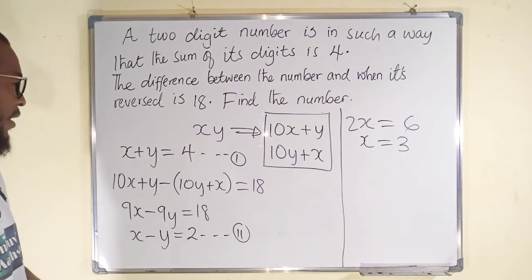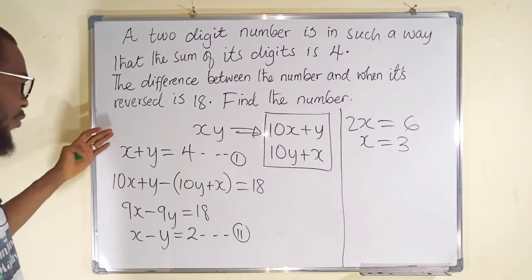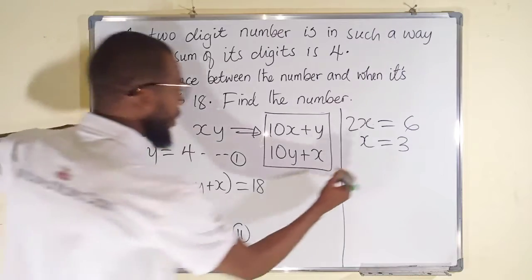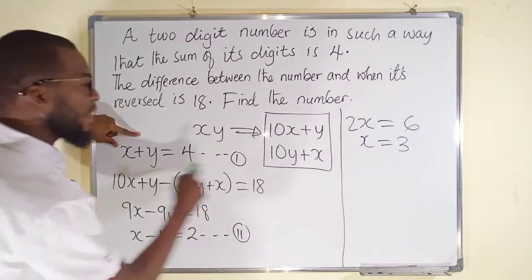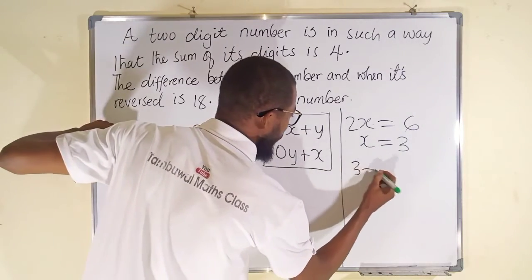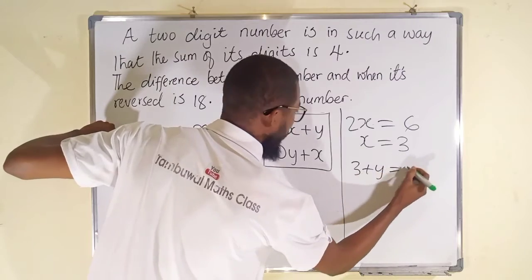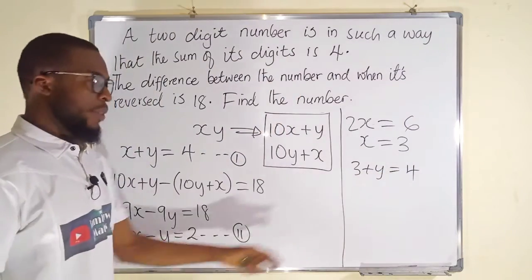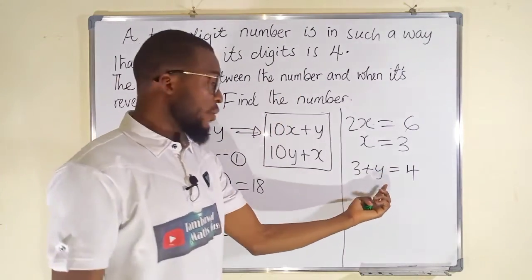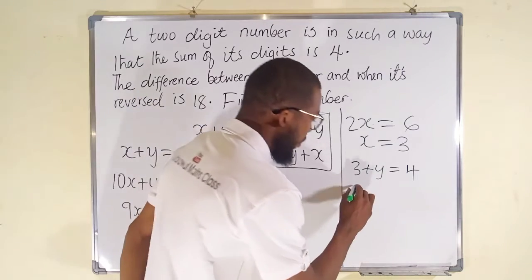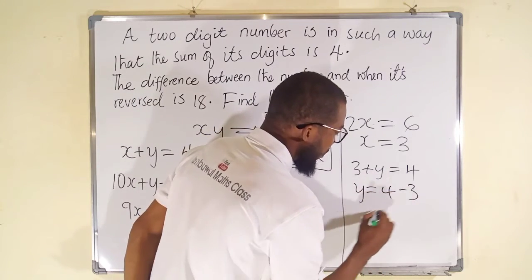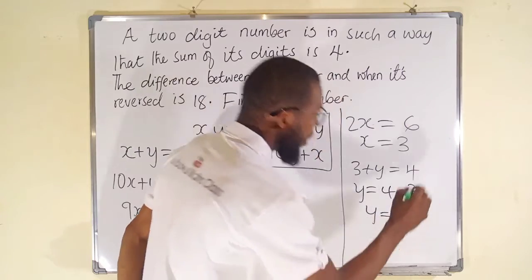We can determine the value of Y from either equation 1 or equation 2. Let me use equation 1. We have X plus Y, which is 3 plus Y, this is equal to 4. Y must be 1 because 1 plus 3 is 4. Therefore Y equals 4 minus 3, and Y finally is equal to 1.